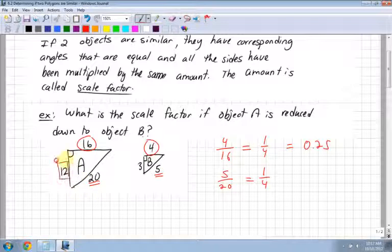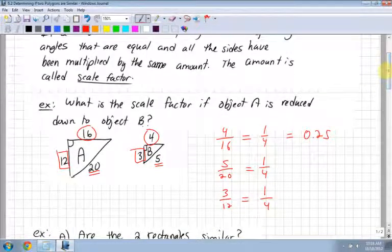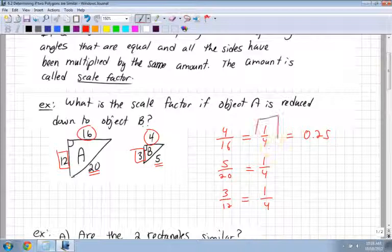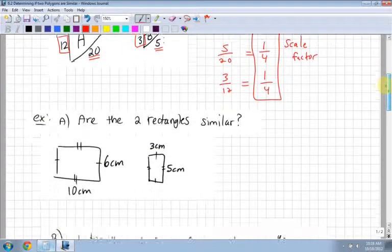I have a 12, and I have a 3. Start with the 3. So 3 divided by 12. I can divide both by 3 to reduce this. It becomes 1 quarter. Good. So those are all the same. So it's been reduced by a factor of 1 quarter. All the same. That's my scale factor. Notice it's a fraction because it's getting smaller.